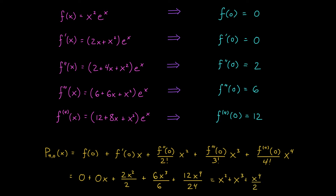Notice that our polynomial has a common factor of x squared, and so too does our original function — there's an x squared out front. Is that a coincidence? No. If we factor out this x squared from the polynomial, we're going to get x squared times one plus x plus x squared over two.